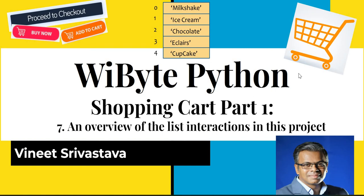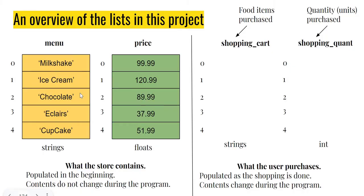We are going to deal with multiple lists, so it's helpful to take a top-level view first before we start writing any code. When we start, we have two lists: one is the menu and one is the price. The menu contains all the items available to be sold in our shop — in this case five items, so the menu is a list going from index zero to four. All menu items are strings because these are names of the items we are selling. The price list holds the price of all these items in whatever currency you are dealing with.